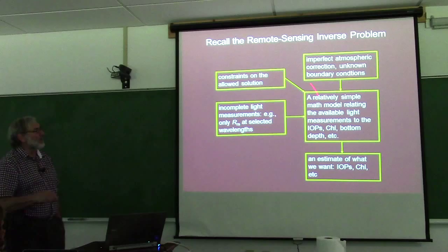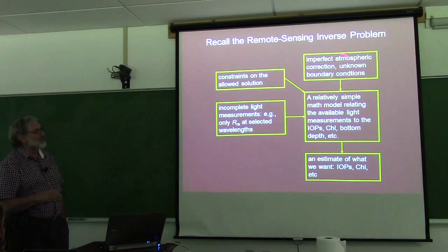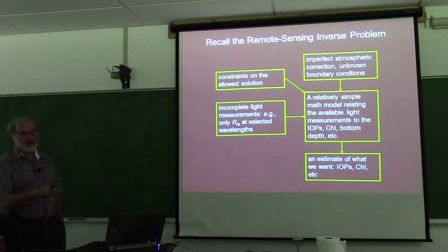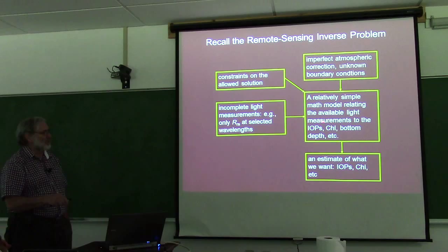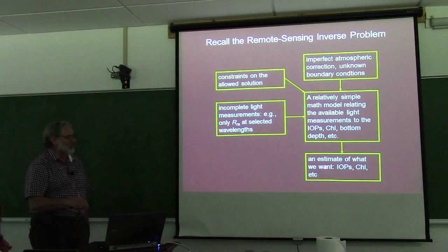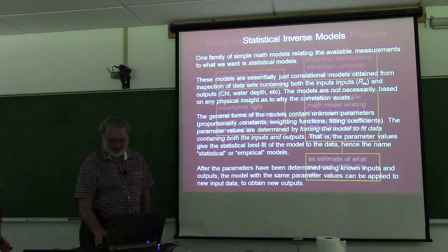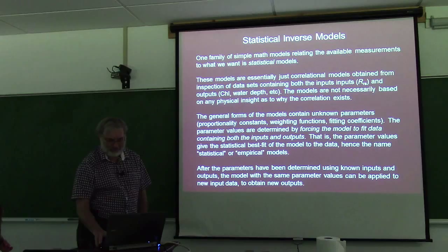Keep in mind, what we're doing here is an inverse problem. We're going to have incomplete light measurements — maybe only the remote sensing reflectance spectrum — and that's going to have errors due to bad atmospheric correction, or it might be optically shallow water where you don't know the depth. But we'll have a simple math model that takes what we know, adds some constraints, and gives us what we're interested in, like IOPs or chlorophyll concentration.